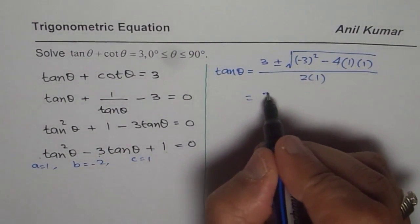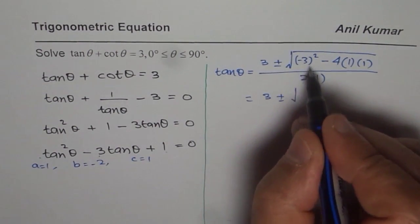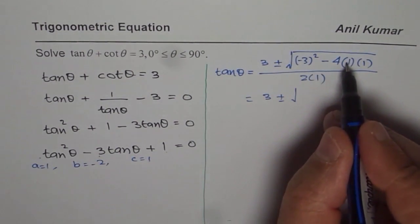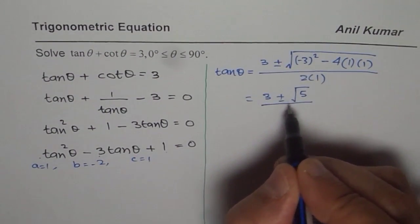So let us solve it. We get 3 plus minus. This is 9 and minus 4 is 5. So we get 3 plus minus √5 over 2.